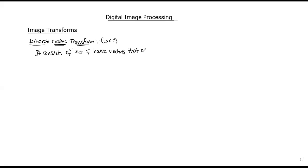So, we have a set of basic vectors. These basic vectors correspond to sampled cosine functions. Each basis vector is a sampled cosine function, and I represent them as X of k.